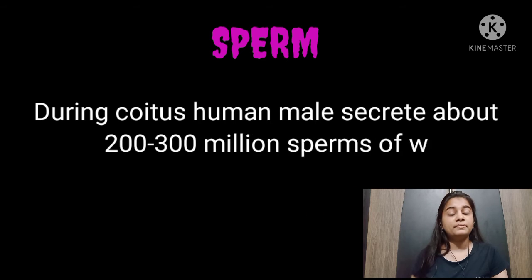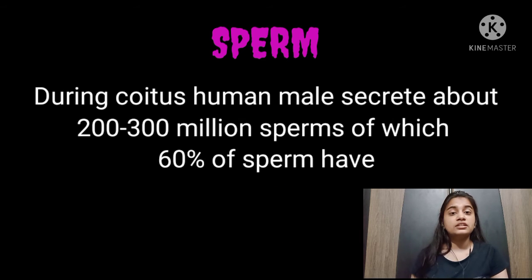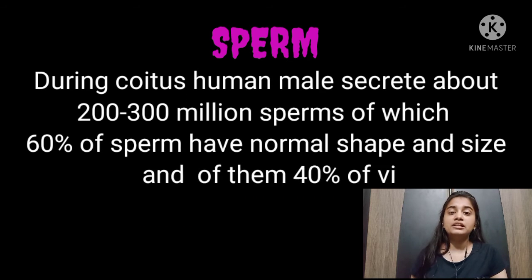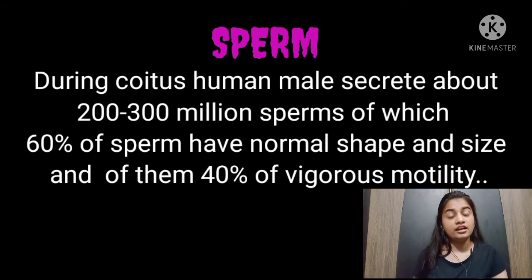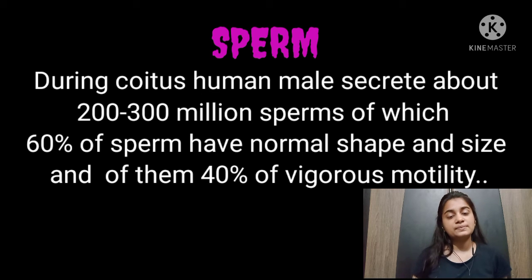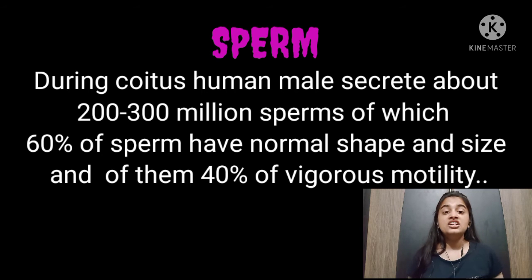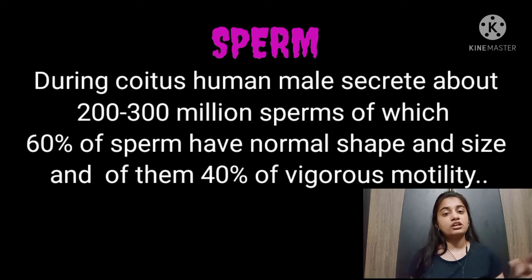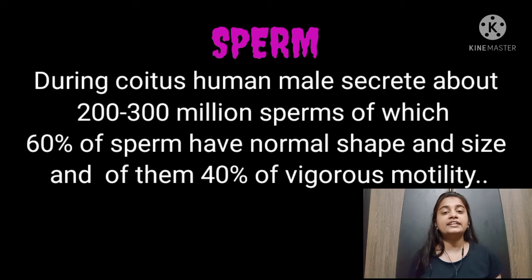In a single coitus, a human male ejaculates 200–300 million sperm. Of these, 60% are healthy in shape and size, and 40% show vigorous motility — meaning they move rapidly and with good speed.